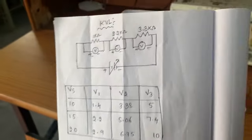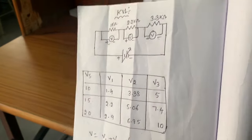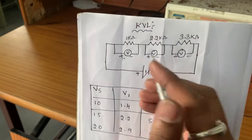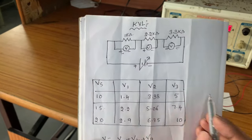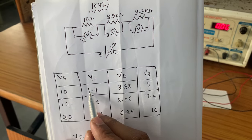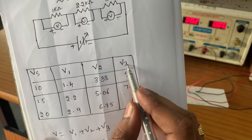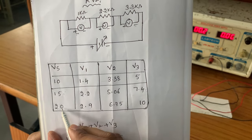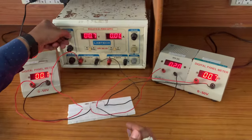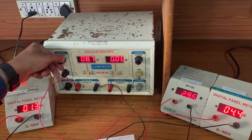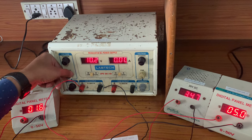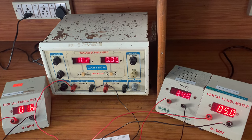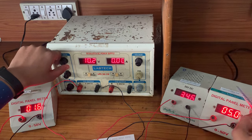Up to now we got the values. There is a small variation of 1 or 2 volts if you conduct the experiment, since it is a practical experiment. But you should get approximately the same values. We have taken 15, 20, and 25 volts. For 10 volts, you will get V1 equal to 1.4 volts, V2 equal to 3.38 volts, and V3 equal to 5 volts. For 15 volts: 2.2 volts, 5.06 volts, and 7.4 volts. At 10 volts, you will get 1.6 volts, 3.4 volts, and 5.0 volts for V1, V2, V3.